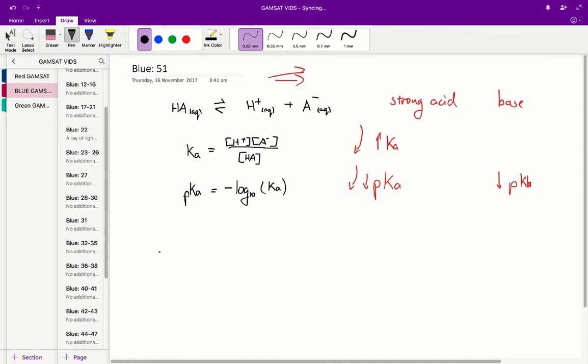What you also have to know is that a strong acid has a weak conjugate base. And similarly, or conversely, a strong base has a weak conjugate acid. So with this in mind, what we know is that in 51 we are given a strong base. So if we have a strong base, therefore we have a weak conjugate acid.